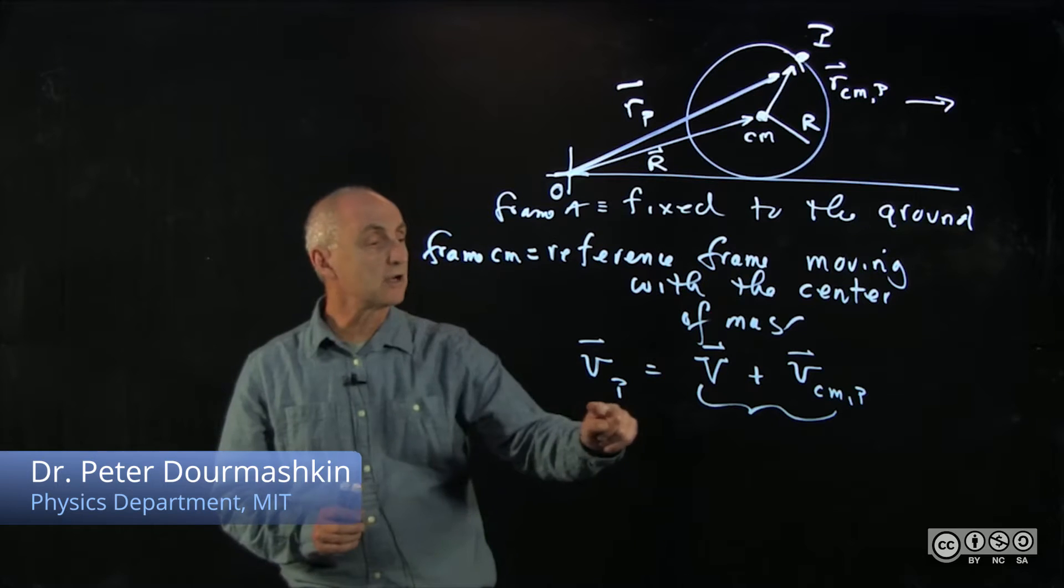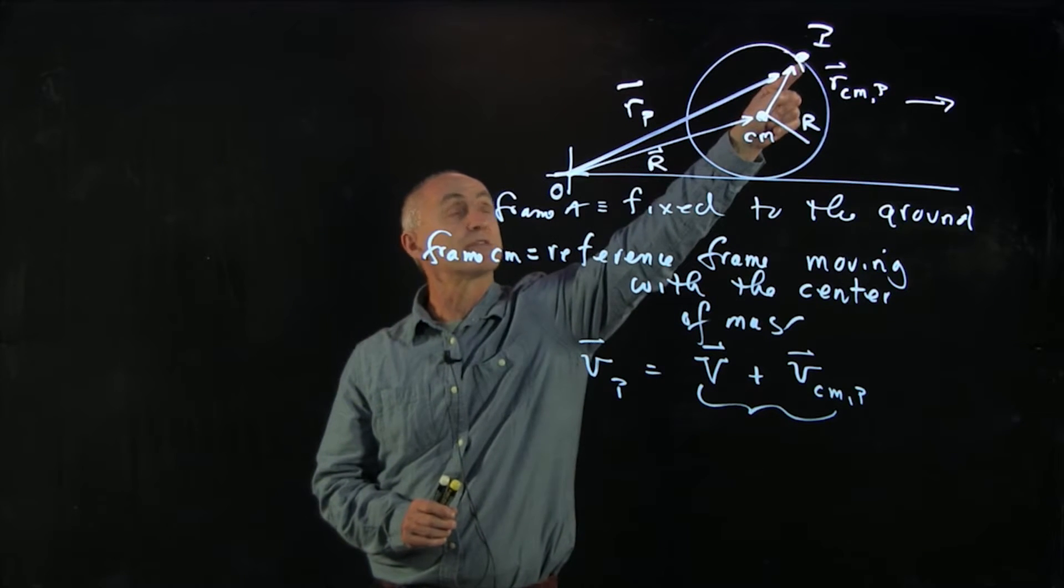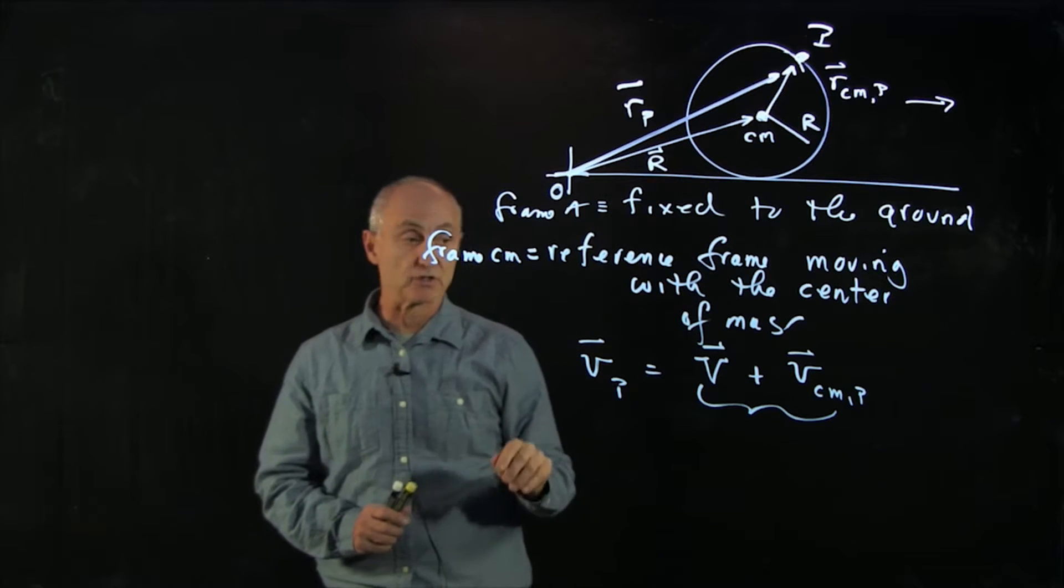So now what we'd like to do is try to understand how to apply the law of addition of velocities so we can express the velocity of the point on the rim in the reference frame fixed to the ground.